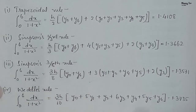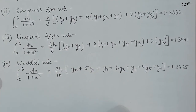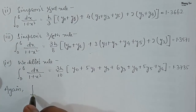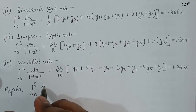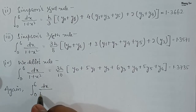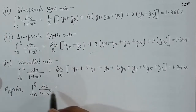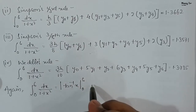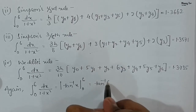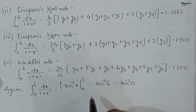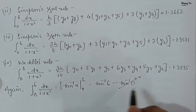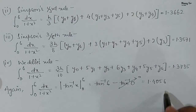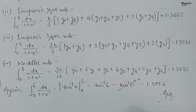Finally, the problem asks for the actual value. The exact integral ∫₀⁶ dx/(1+x²) = [tan⁻¹(x)]₀⁶ = tan⁻¹(6) − tan⁻¹(0). Since tan⁻¹(0) = 0 and tan⁻¹(6) = 1.4056, the actual value is 1.4056. Thank you.